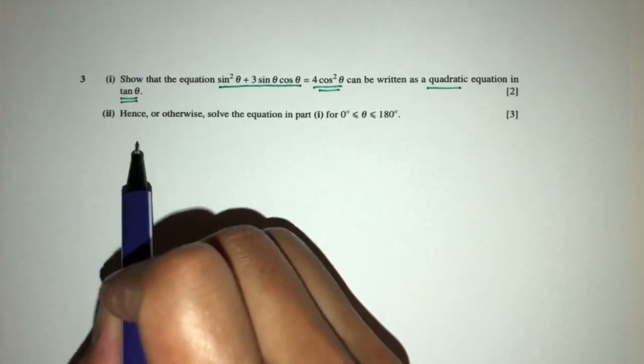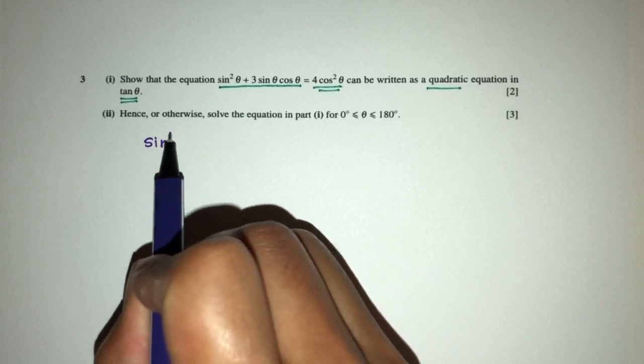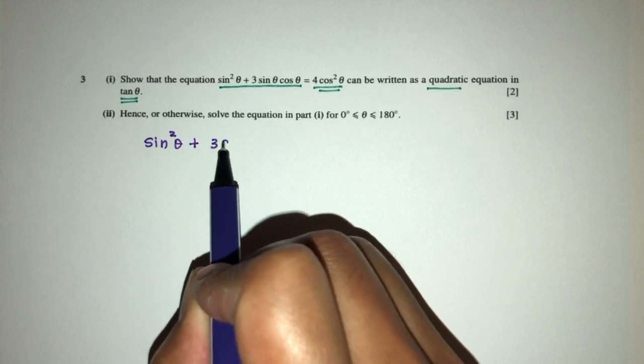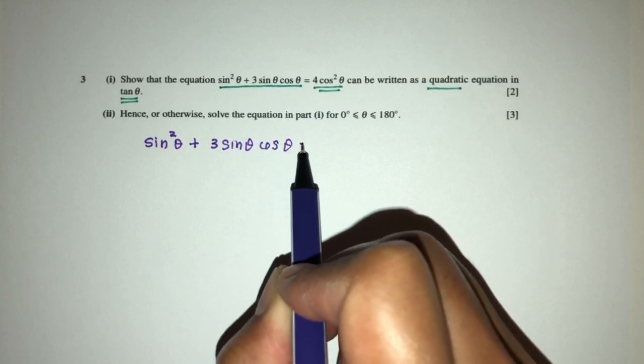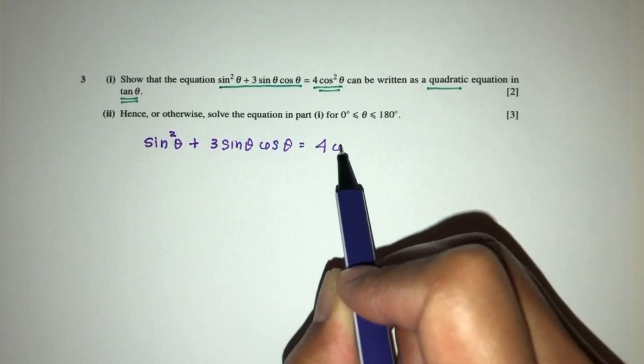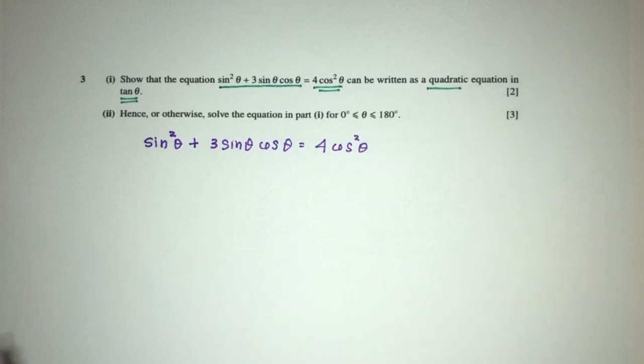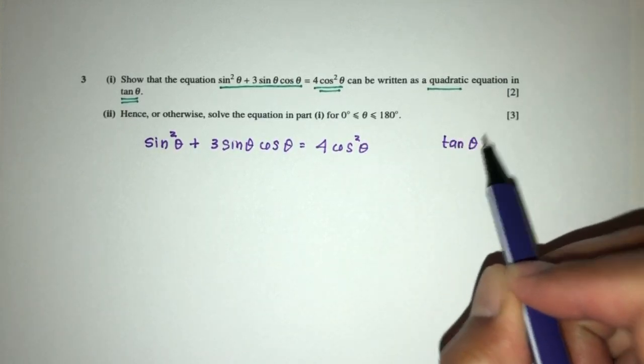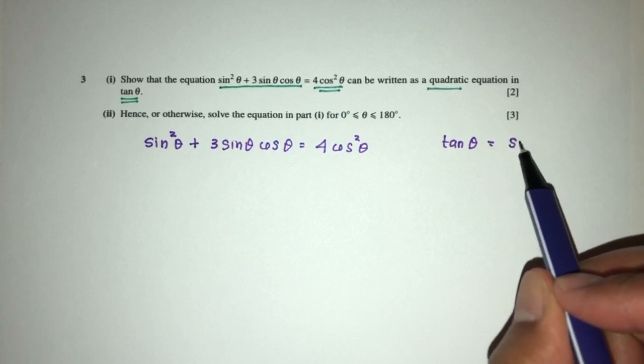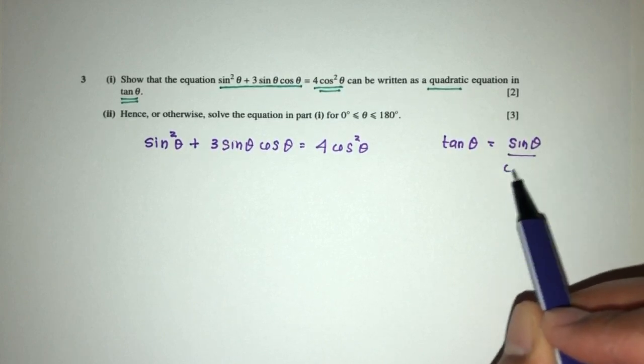Step by step, we have sin²θ + 3sinθcosθ = 4cos²θ. Now the first thing we realize is what is tan θ? Tan θ is equal to sinθ over cosθ.